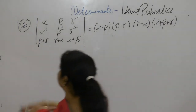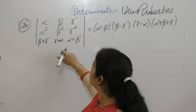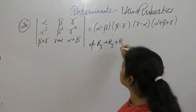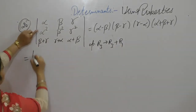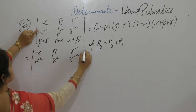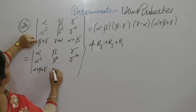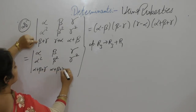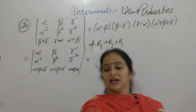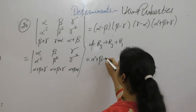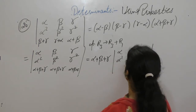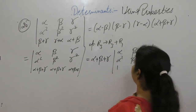Now take α plus γ in R3. We have β plus γ and α here, so operate R3 as R3 plus R1. After operating, what we get: row 1 is α, β, γ; row 2 is α squared, β squared, γ squared; row 3 becomes α plus β plus γ, α plus β plus γ, α plus β plus γ. Take (α plus β plus γ) common from R3, leaving 1, 1, 1 in that row.